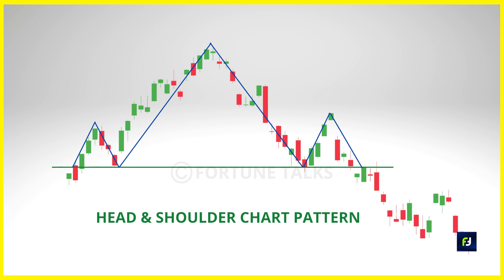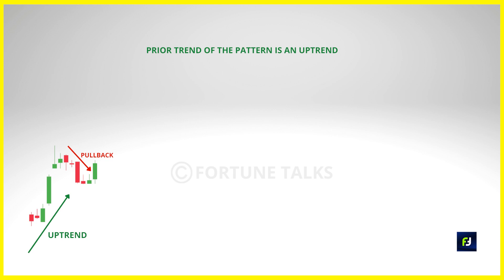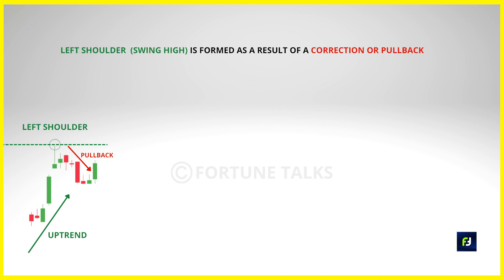The head and shoulders pattern is one of the most popular reversal chart patterns out there, and because it is popular, the chances of making a mistake are also high. The pattern consists of four different parts: the left shoulder, the head, the right shoulder, and the neckline. We will start from the left shoulder. The initial trend in the market is an uptrend where the price rallies higher and then the market does a pullback. The left shoulder is formed as the market does a pullback, and at this point there is no way to tell if the market will reverse because pullbacks occur regularly in a trending market.